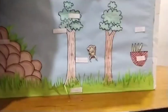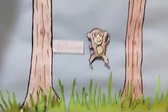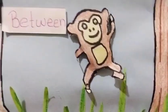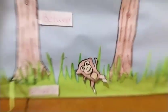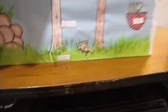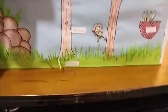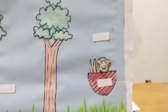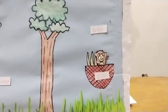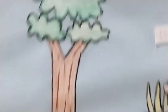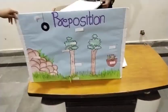Here, monkey is in front of the grass. In front of is a preposition. Now monkey is in the basket. Here, 'in' is a preposition.